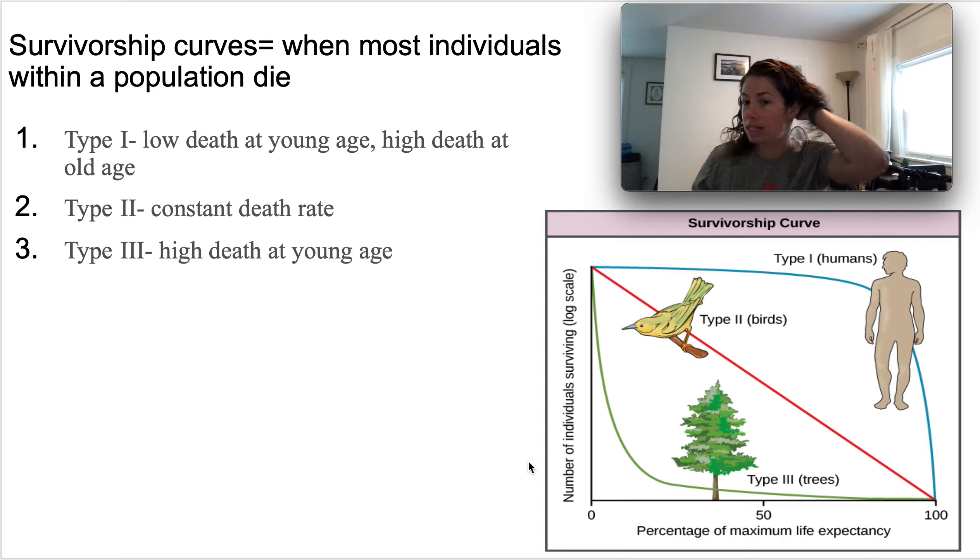There's three big trends that we see, or three types. The first one is called Type I, and that's what we are, so it should be the most easy for us to remember. That is you have a very low death at young age. You're more likely to die at old age once you've hit that life expectancy. A lot of the organisms that we interact with—your pets, cats, dogs—a lot of mammals have Type I survivorship in that they most likely will survive to the maximum of their life expectancy.